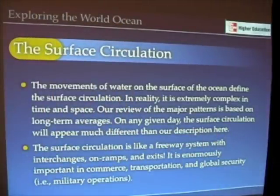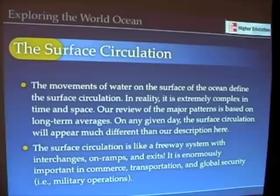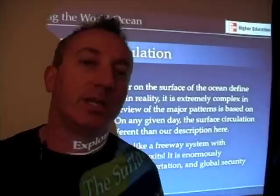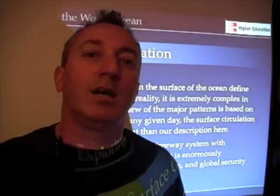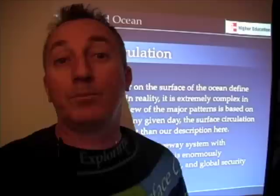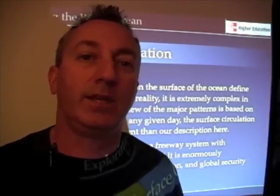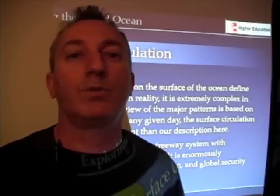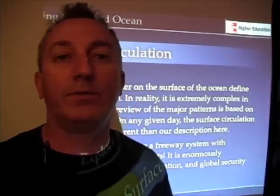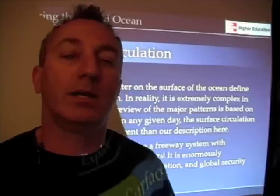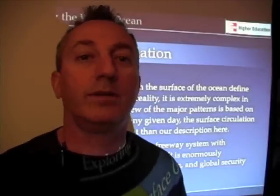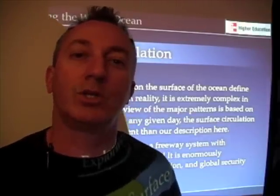One thing I really want to emphasize is that the surface circulation of the ocean is really like a freeway system with its interchanges, on-ramps, and exits. The surface circulation presented the very first need for practical applications of oceanography. Knowledge of ocean currents was, of course, very useful to people involved in trade — moving ships from Europe to America and back depended upon knowledge of ocean currents.